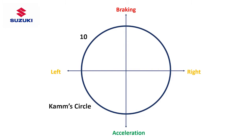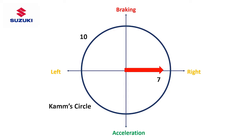If the diameter of the circle represents the maximum grip levels available in our tires — let's say that is expressed as 10 — if we brake just by itself we might create a longitudinal force of 7 out of 10, which is still well within our grip levels. Similarly, we might accelerate with a force equal to 7 out of 10 and still have grip. However, if we brake and steer at the same time with a lateral force of 7 out of 10 and a braking force of 7 out of 10, the resultant force between those two vectors will put us outside the total grip levels available, and that is where we lose grip.